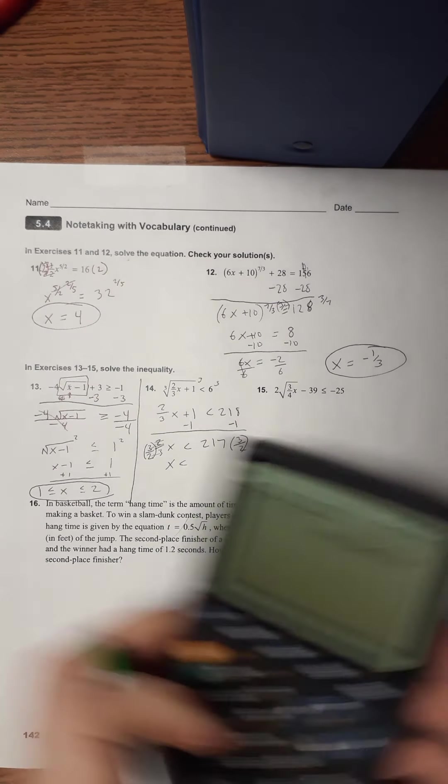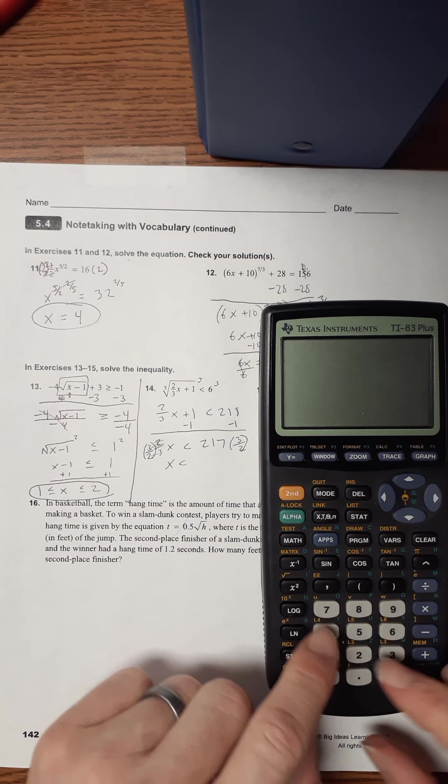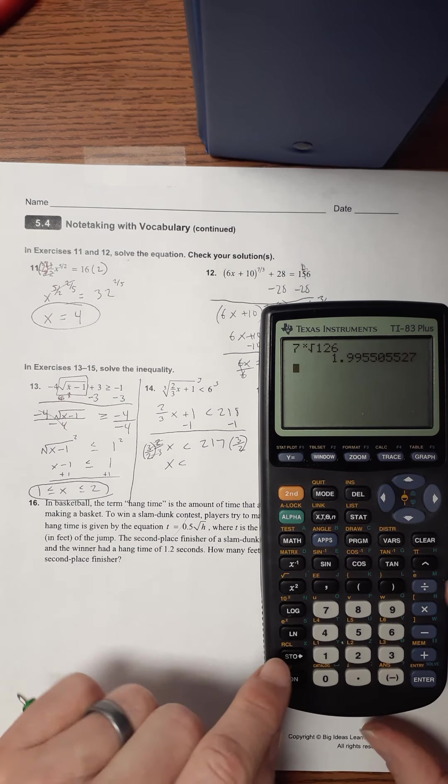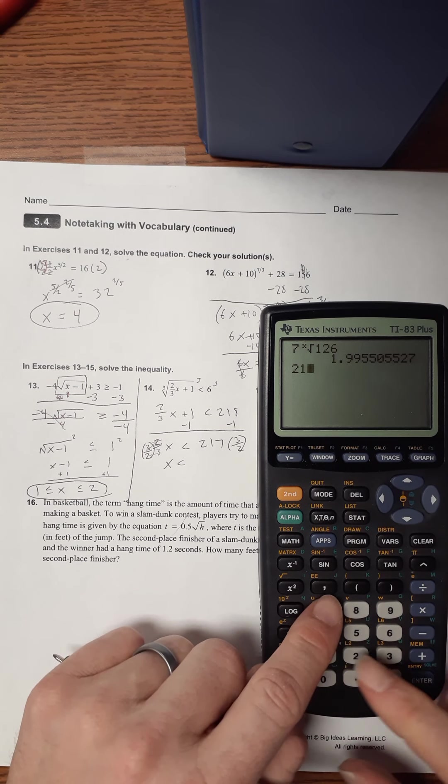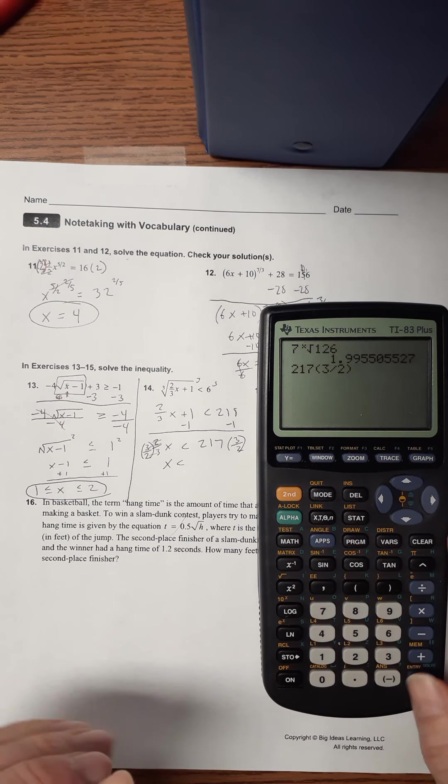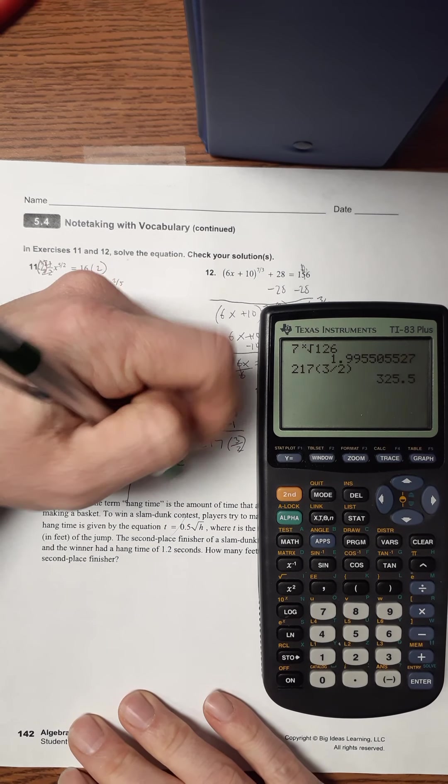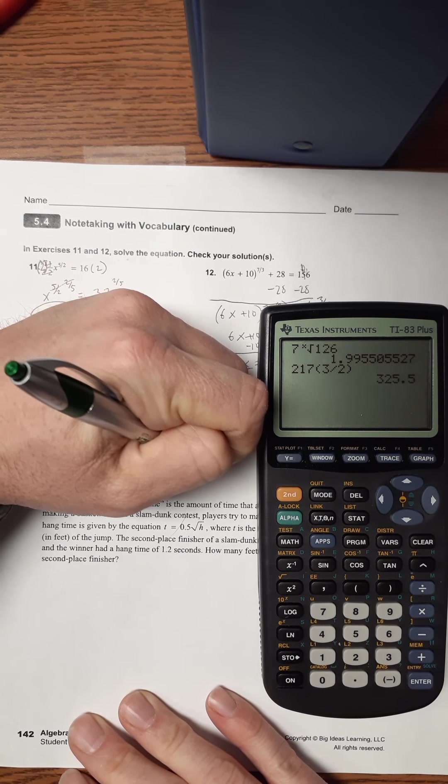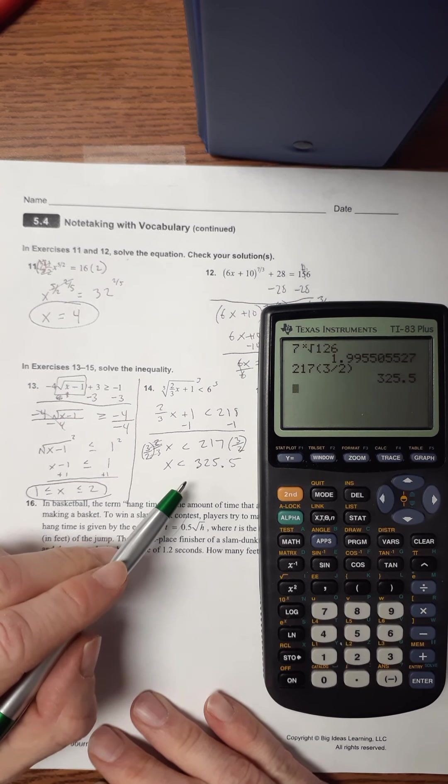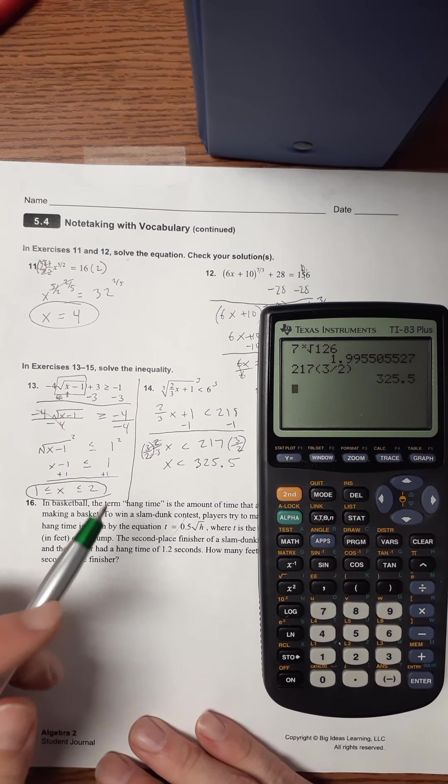And I cannot do that in my head. So, it's less than. Oh, I'm going to sneeze. Excuse me. My sneezes usually come in twos. There's the other one. All right. Let's finish this up. 217 times 3 halves. 3 divided by 2. x has to be less than 325.5.